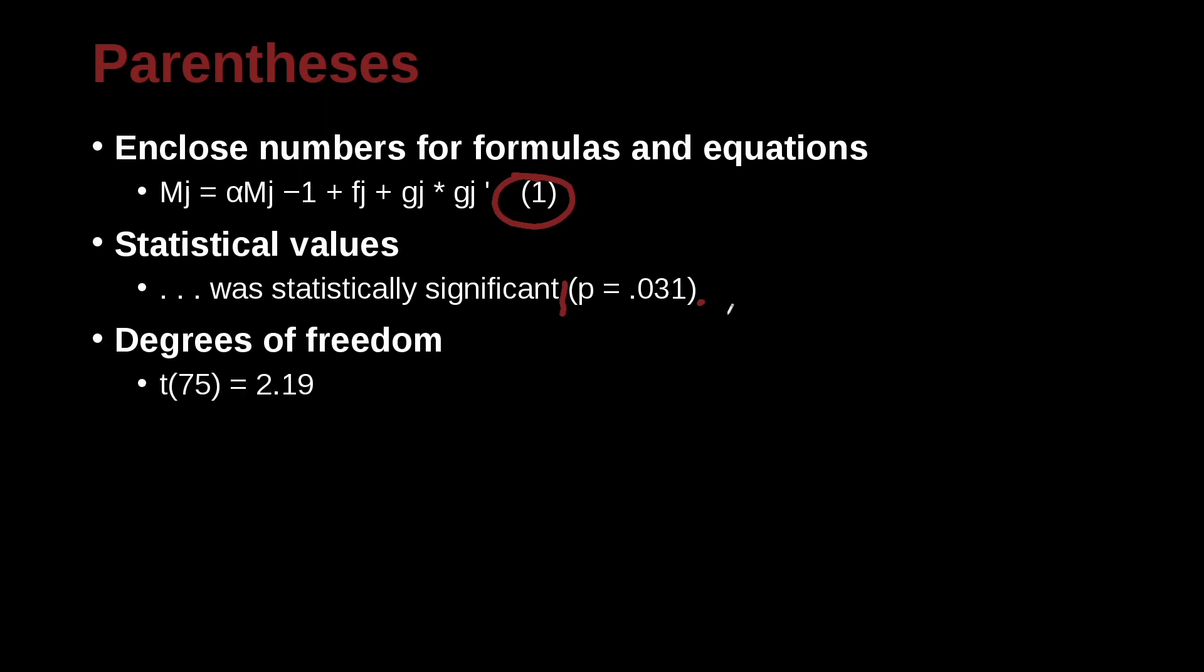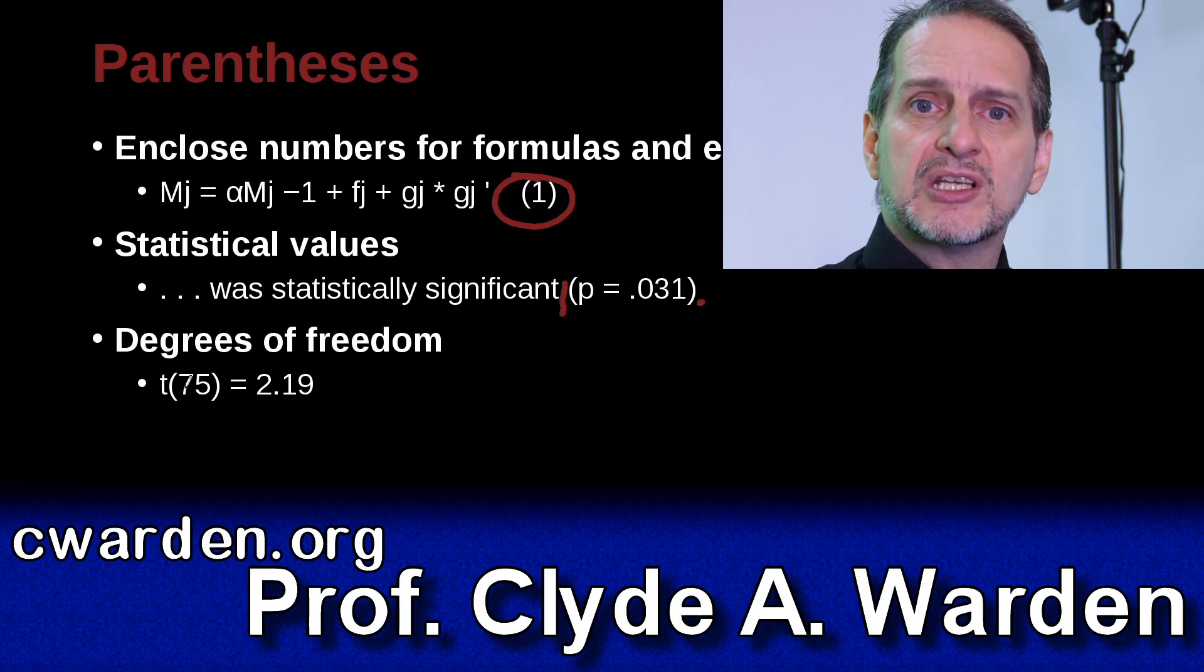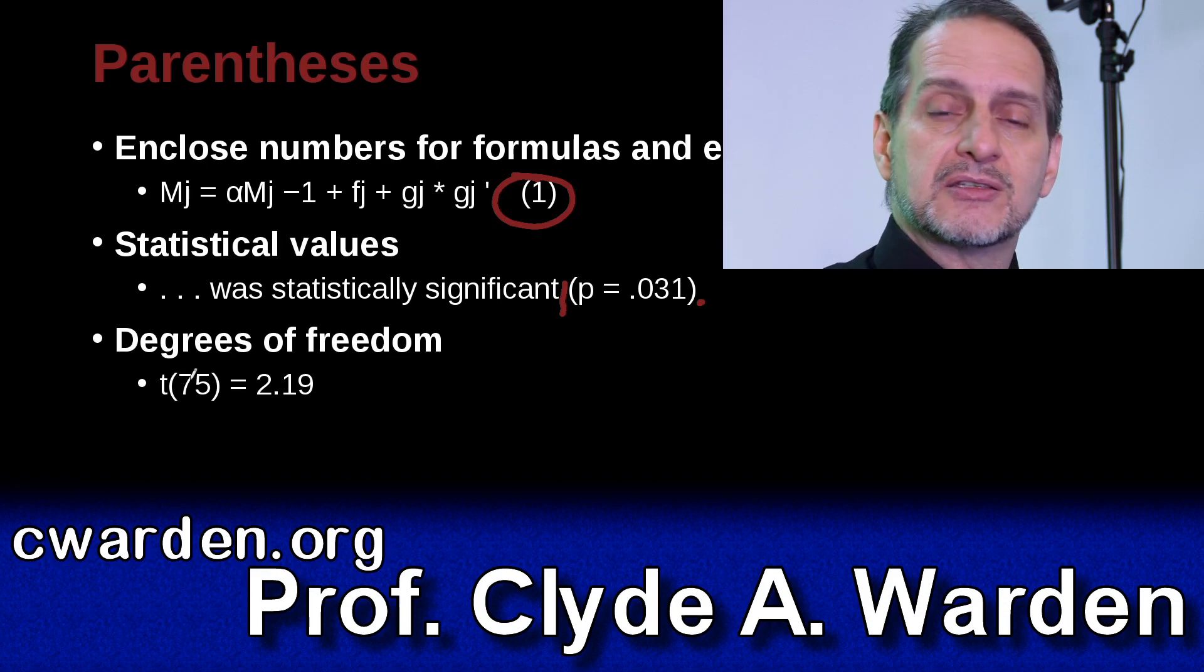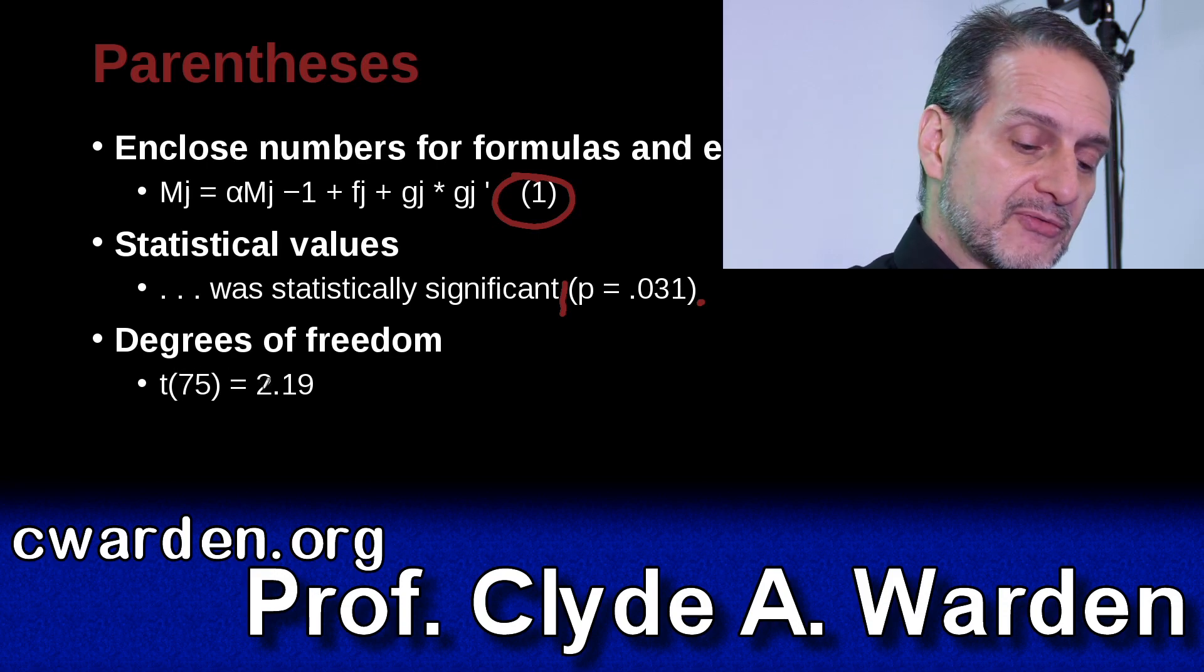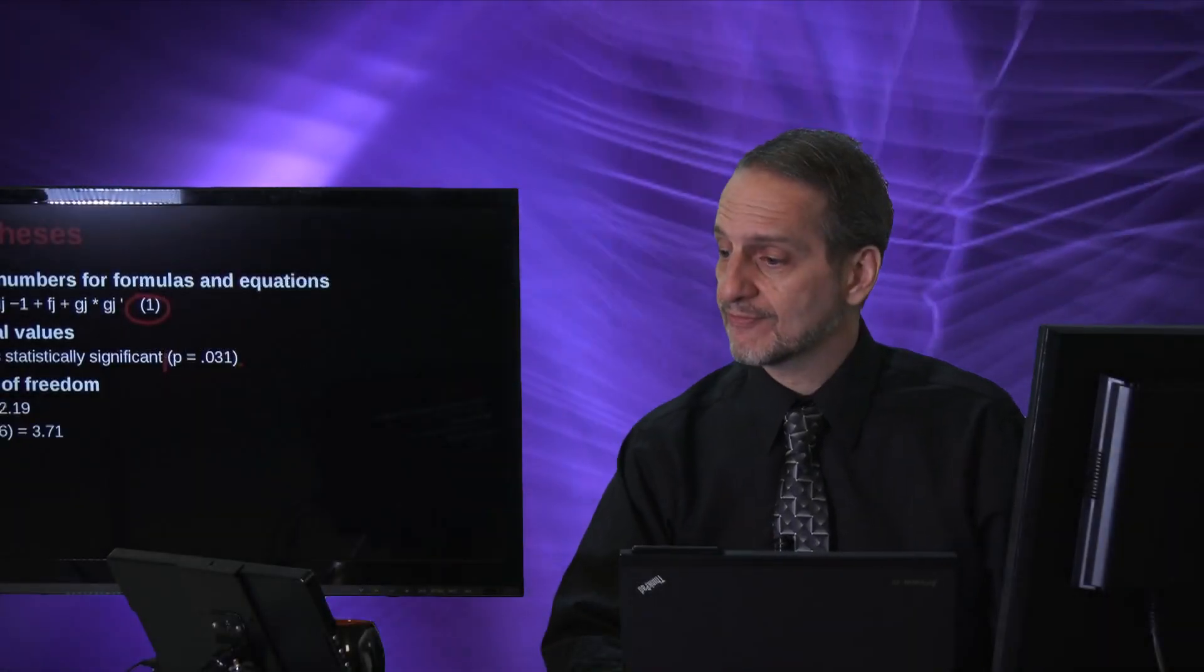You also use it in statistics for degrees of freedom. So for example here, the t-value 75 degrees of freedom equals 2.17. That is to say that the statistical value is 2.17, but the degrees of freedom or the sample size is in this case 75.